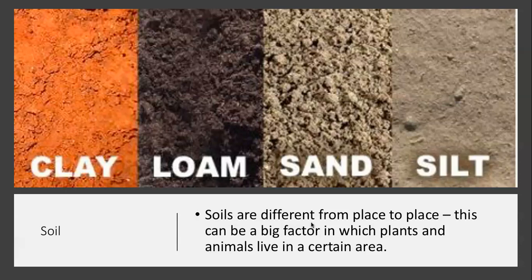When we talk about the next abiotic factor, that's soil. Soils are different from place to place — they're made up of slightly different sized material. This can be a big factor in which plants or animals live in a certain area. It's just another non-living factor that influences the living factors of an environment.